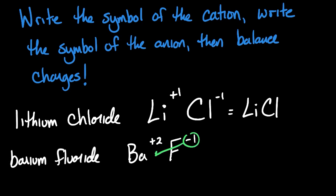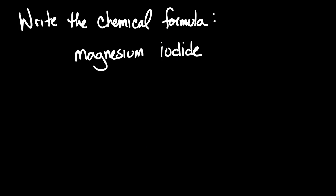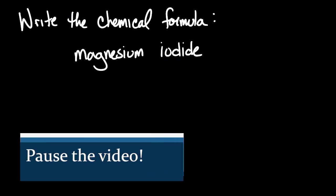Here's a shortcut — the crisscross method. The charge of the cation becomes the subscript of the anion, and vice versa. The formula is correct because the overall charge is zero, and we express subscripts in the lowest whole number ratio. Pause the video and write the chemical formula for this compound.